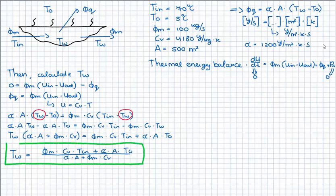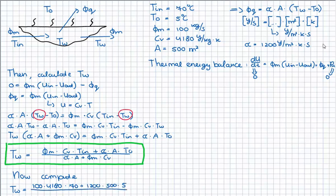Bringing T_w to the left side gives: T_w times (alpha times A plus Vm times heat capacity) equals Vm times heat capacity times T_in plus alpha times A times T_outside. All variables on the right side are known, so we can compute the temperature by filling in every number. We get 31.7 degrees Celsius, which is actually quite a nice temperature to swim in, especially when it is quite cold outside.